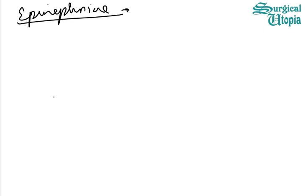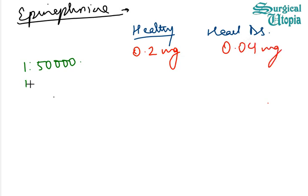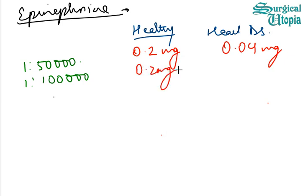Now, calculating epinephrine — to know the maximum dose that can be given in a healthy patient and in a patient with heart disease. At a concentration of 1:50,000, the maximum dose for a healthy patient is 0.2 mg. At a concentration of 1:100,000, the maximum dose for a healthy patient is 0.2 mg, and in a heart disease patient it is 0.04 mg.